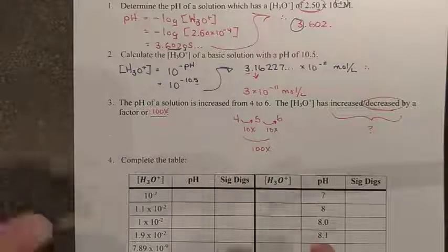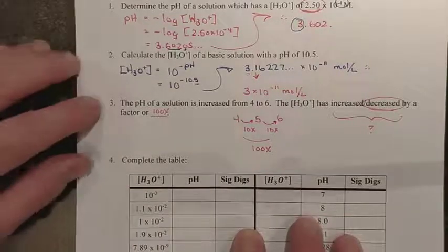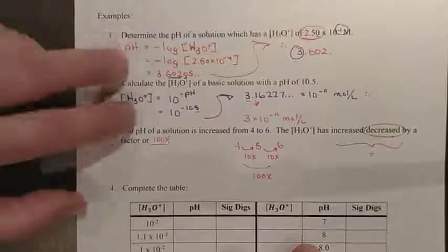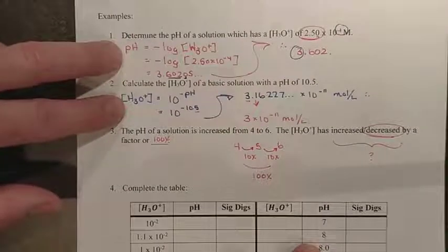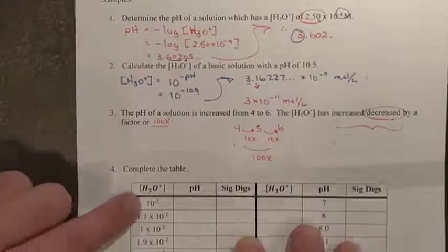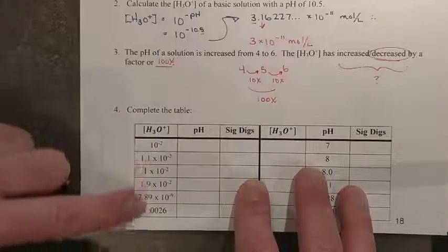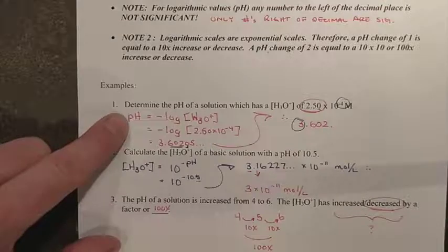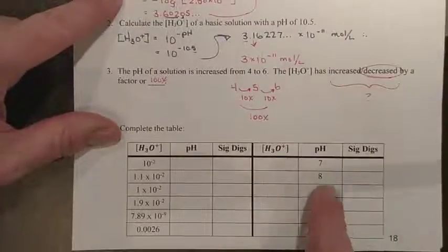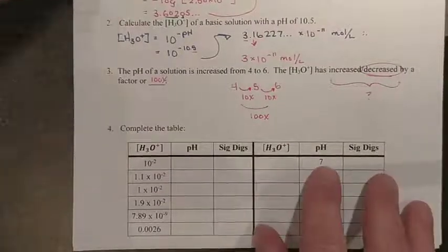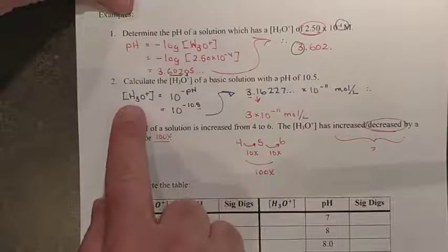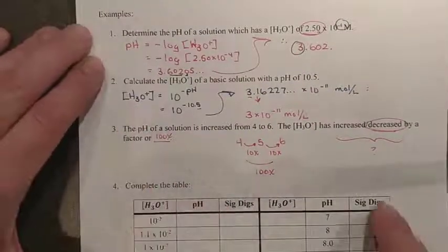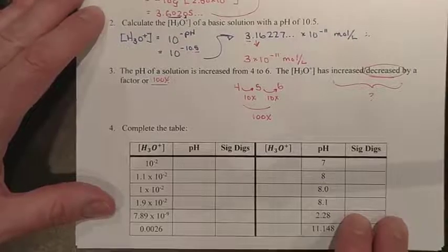So there is a table here. Please follow the examples that we've done here to try and do them. If I give you a hydronium ion concentration, then you can calculate pH from that. If I give you pH numbers, then you can calculate the hydronium ion concentration. Try this out. Do your best with it.